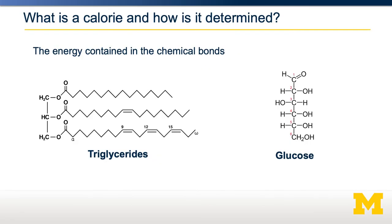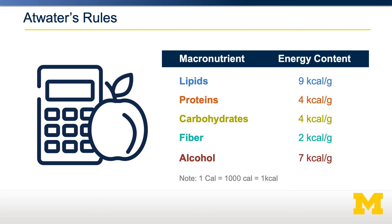Turning back to food — what is a calorie and how is it determined? Calories are determined by the energy contained in chemical bonds that are available for our bodies to use. If you look at the structure of a triglyceride compared to the structure of glucose, there's a lot more energy in a triglyceride, especially in the fatty acids. There are 9 kilocalories per gram of triglyceride, compared to only 4 kilocalories per gram of glucose. These numbers are known as Atwater's rules, defined since the early 1900s. Proteins and carbohydrates have 4 kilocalories per gram, while lipids have 9.